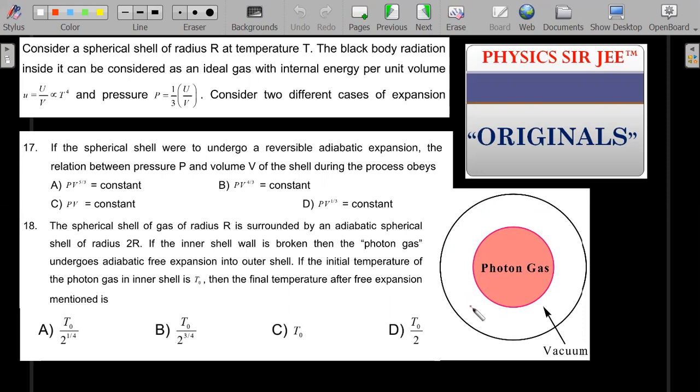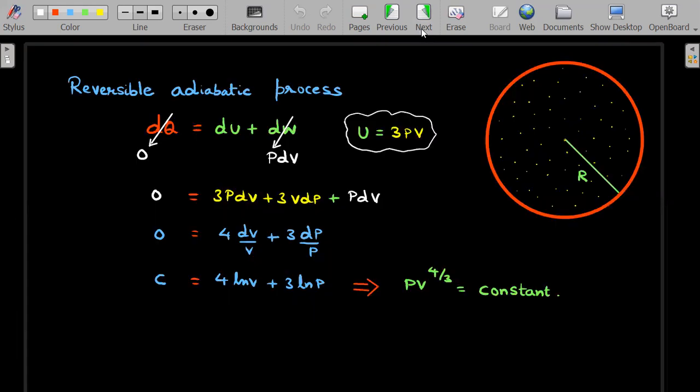It's called adiabatic free expansion. One of the mistakes that you may commit if you are not careful is applying the previous problem solution to the next one. That is wrong because that was a reversible adiabatic process, whereas free expansion is an irreversible one.